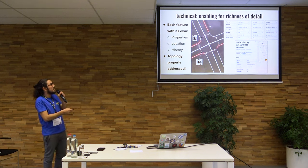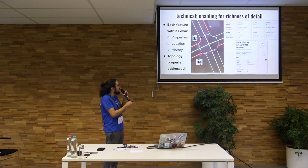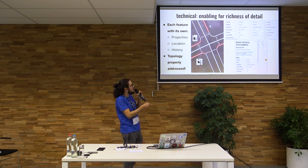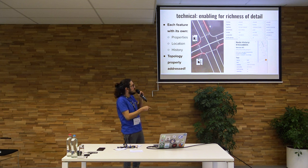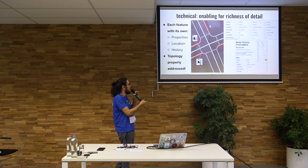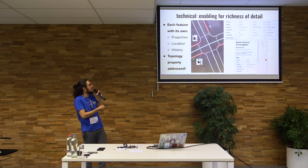Another technical benefit is that it enables richness of detail. Each sidewalk, or even each stretch of the sidewalk, is a different feature. You have the crosswalk, you have the curb access points, and each of these features gets its own tags. It also eases the process of seeing the history of the features, so each feature has its own history and you can put more information there. Also, the topology of the pedestrian network is properly addressed — you have all the connections where they must be.